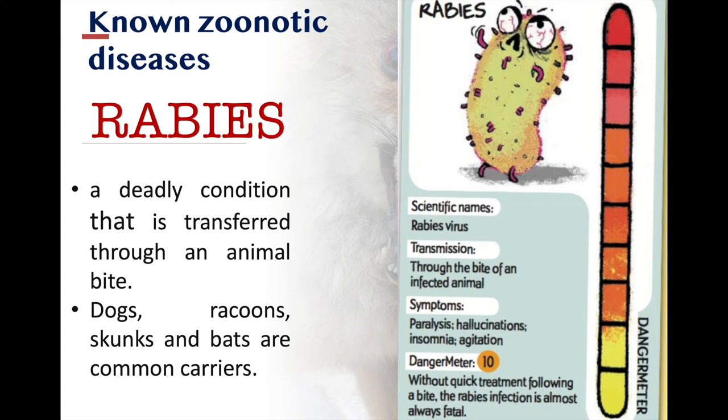One well-known zoonotic disease is rabies. This is a deadly condition that is transferred through an animal bite. The virus is spread through the bite or scratch of a rabid animal. Dogs, raccoons, skunks, and bats are the common carriers. Symptoms could include paralysis, hallucinations, insomnia, and agitation. Without quick treatment following a bite, the rabies infection is almost always fatal.